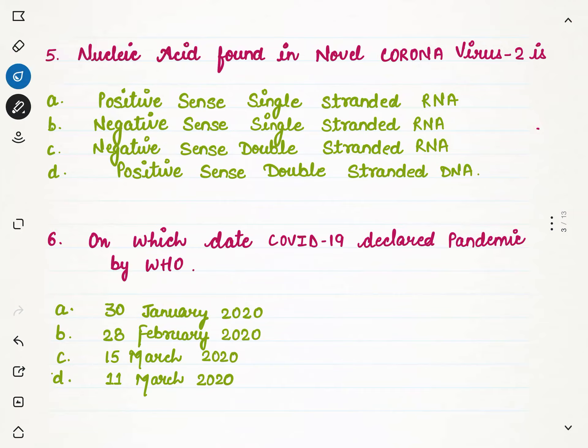The next question is: what nucleic acid is found in novel coronavirus 2? We have four options — positive sense single-stranded RNA, negative sense single-stranded RNA, single sense negative sense double-stranded RNA, and positive sense double-stranded DNA. The correct answer is negative sense single-stranded RNA.